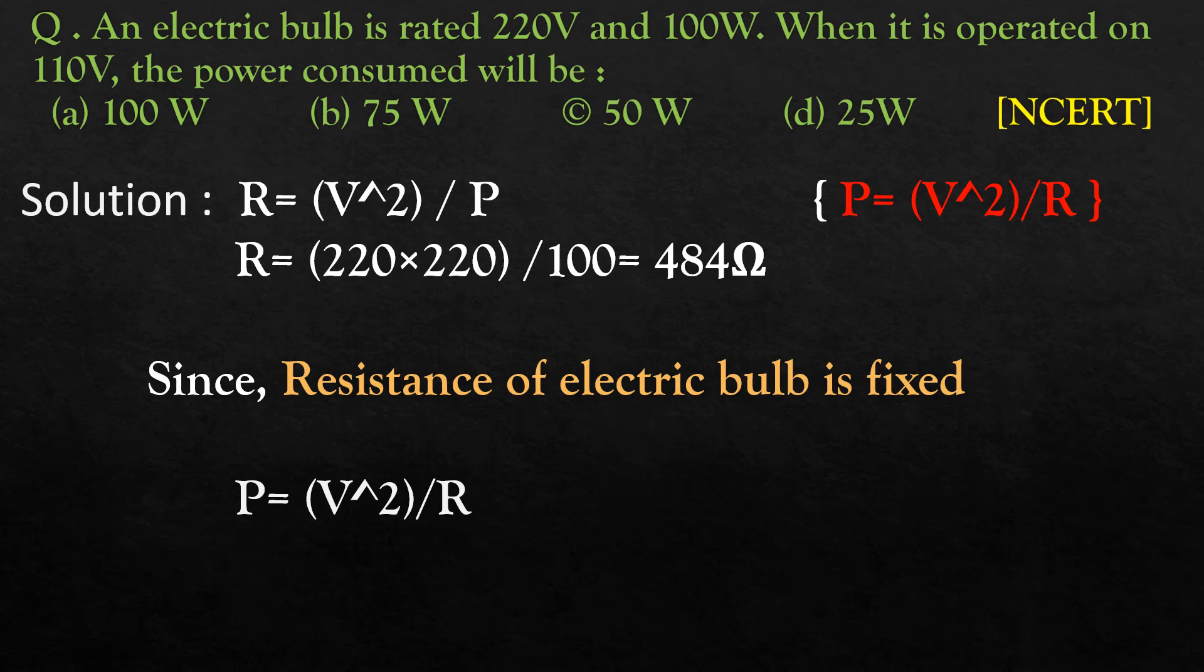The voltage given to us now is 110 volt. So P is equal to 110 into 110 divided by resistance which is fixed at 484.